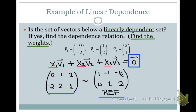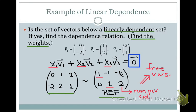Looking at the coefficient matrix, notice that we have two pivots and the last column is a non-pivot column. Because we have a non-pivot column, we know this linear system has three variables. Just by looking at the coefficient matrix in row echelon form, we can conclude that the system forms a linearly dependent set.